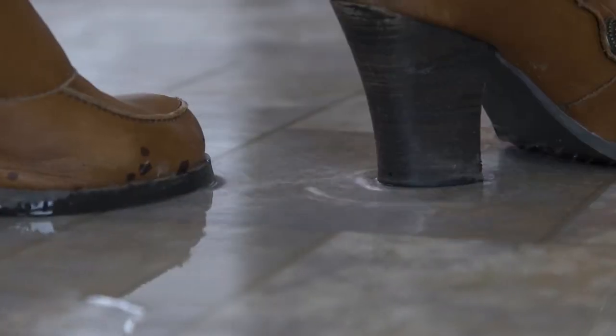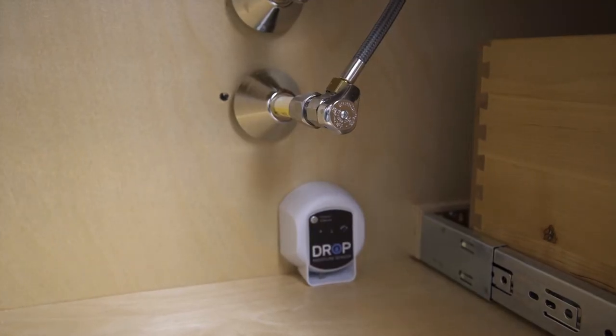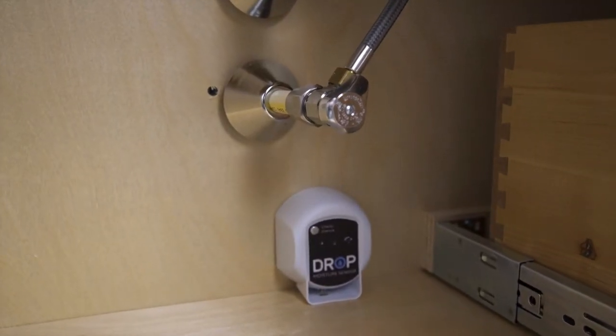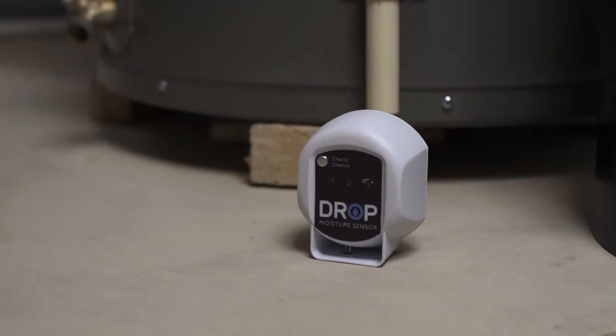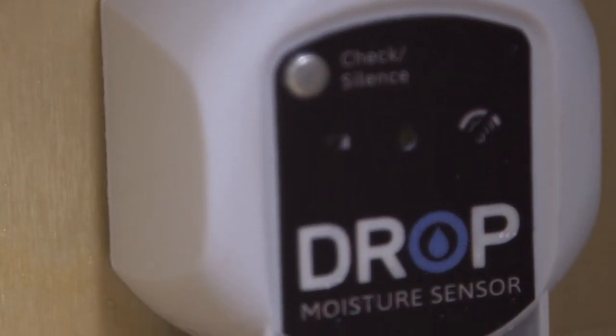Nobody wants to come home to a wet kitchen floor, so we created DROP moisture detection. These sensors can be placed under sinks, around toilets, and at other potential leak areas. If a leak is detected, DROP will notify you and automatically shut off your water.